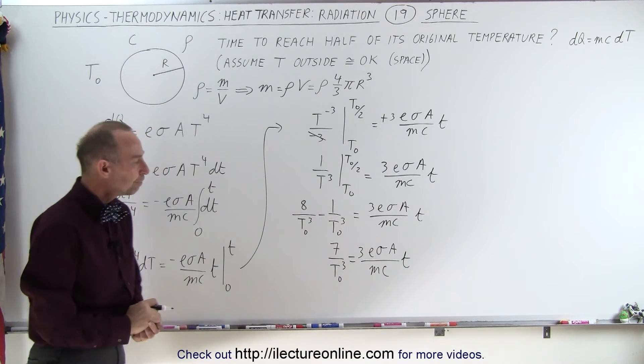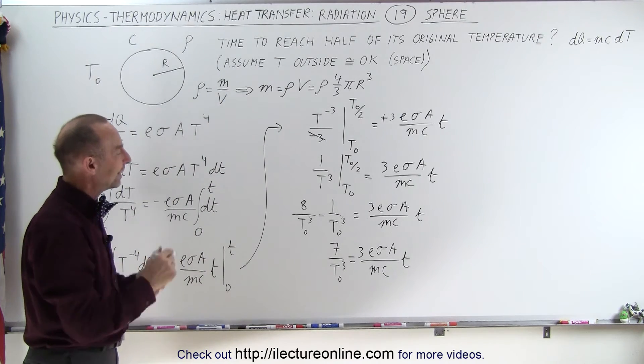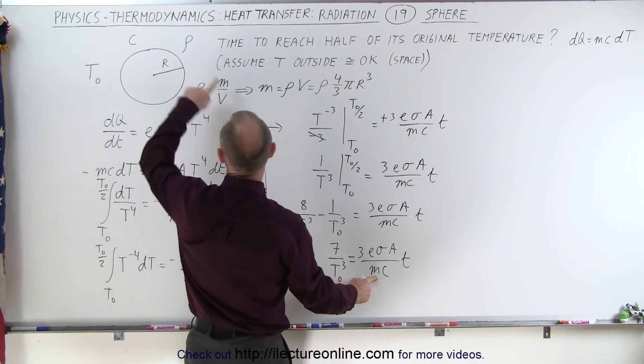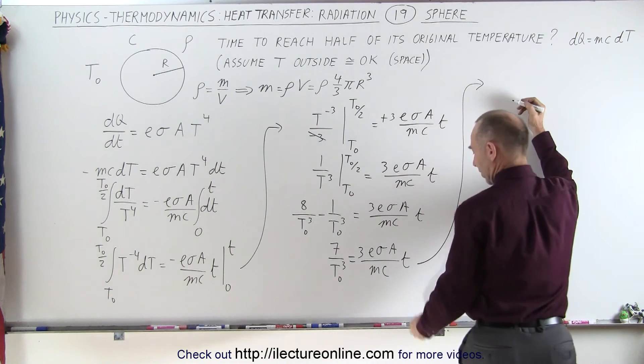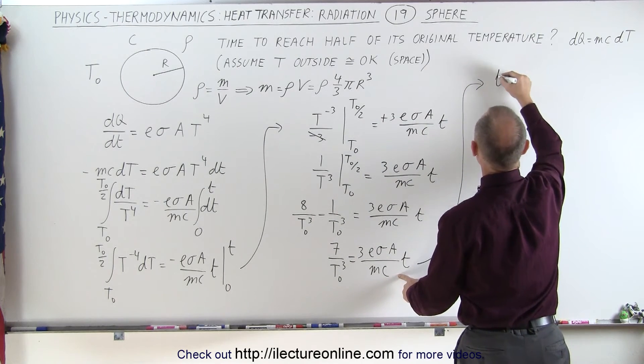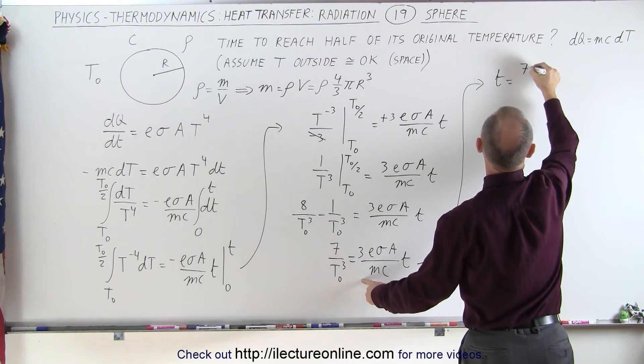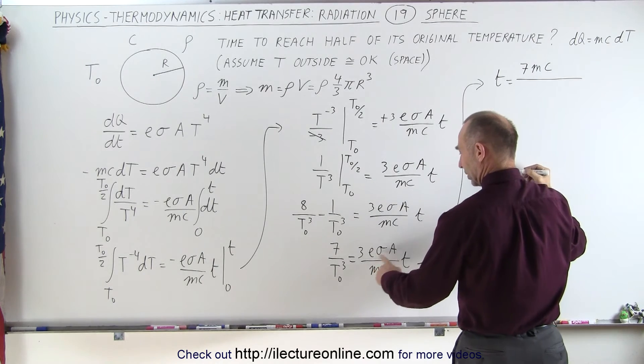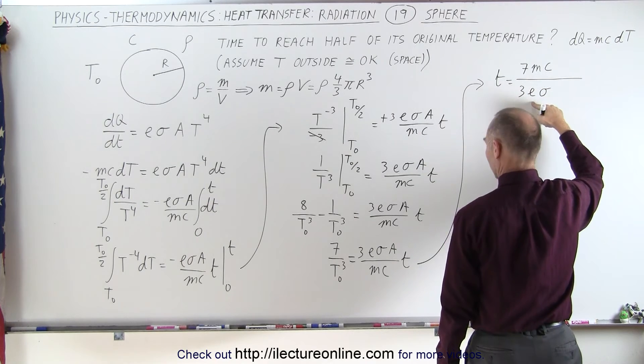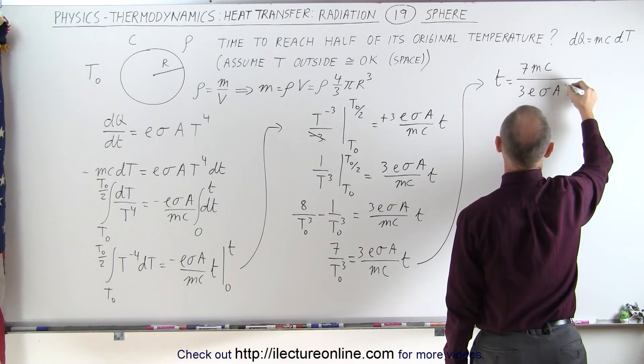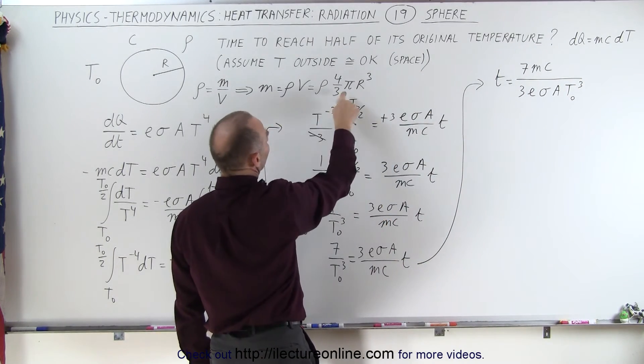Let's solve that for time, that's after all what we're looking for, and then we're going to have to get rid of m since m was not part of the initial given, so we'll have to replace that. Time is equal to seven mc divided by three epsilon sigma A T sub naught to the third power.